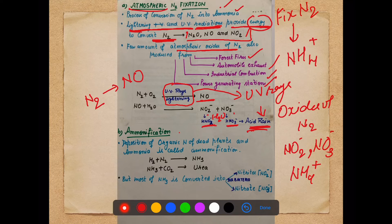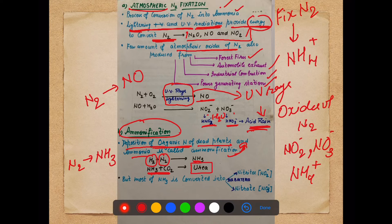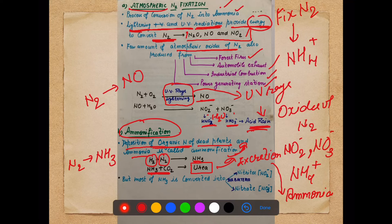The second step is ammonification — the conversion of nitrogen into ammonia, or deposition of organic nitrogen from dead plants into ammonia. When nitrogen and hydrogen react, they form ammonia. This ammonia reacts with carbon dioxide to form urea, which is released through excretion. This urea again converts back into ammonia — and that process is also called ammonification. Most of this ammonia is then converted into the other two forms: nitrite and nitrate.